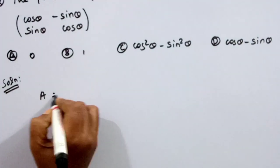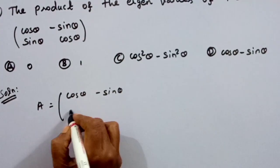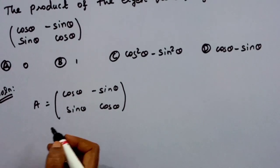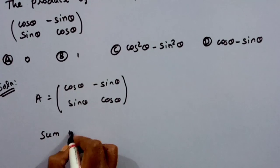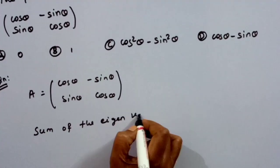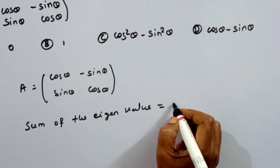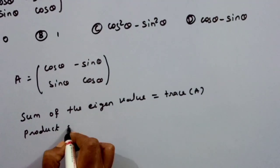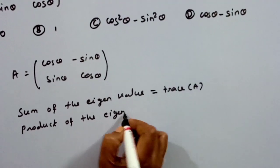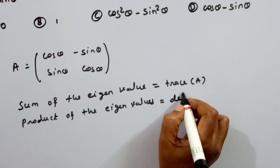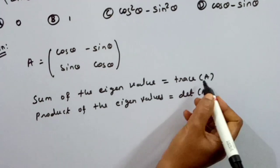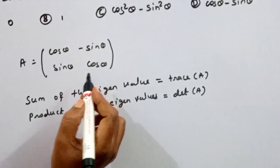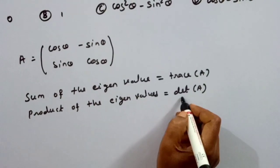Given matrix A equals [cosθ, -sinθ; sinθ, cosθ]. We know that the sum of the eigenvalues is equal to the trace of the matrix, and the product of the eigenvalues is equal to the determinant of A. We calculate the determinant of the given matrix.